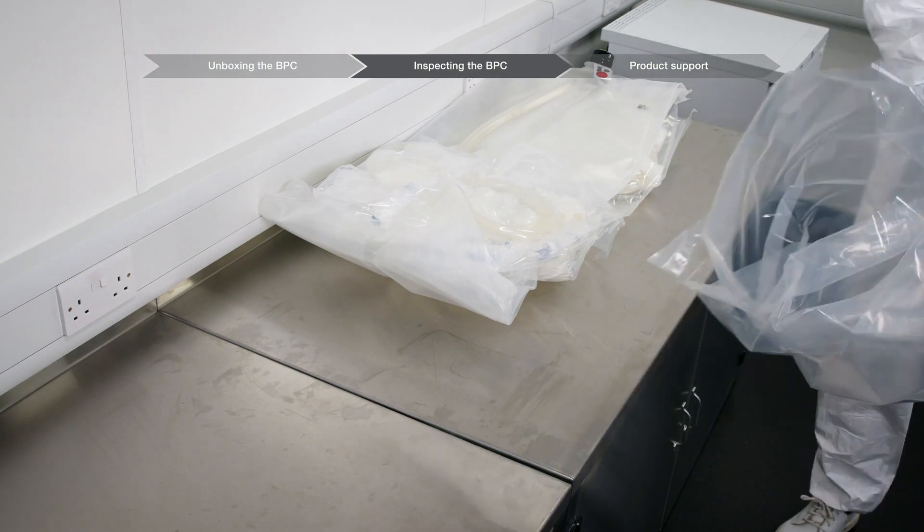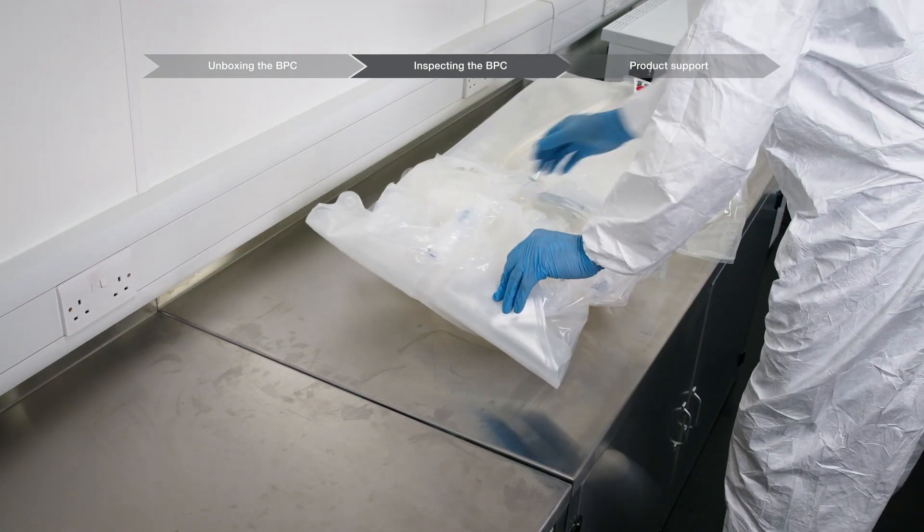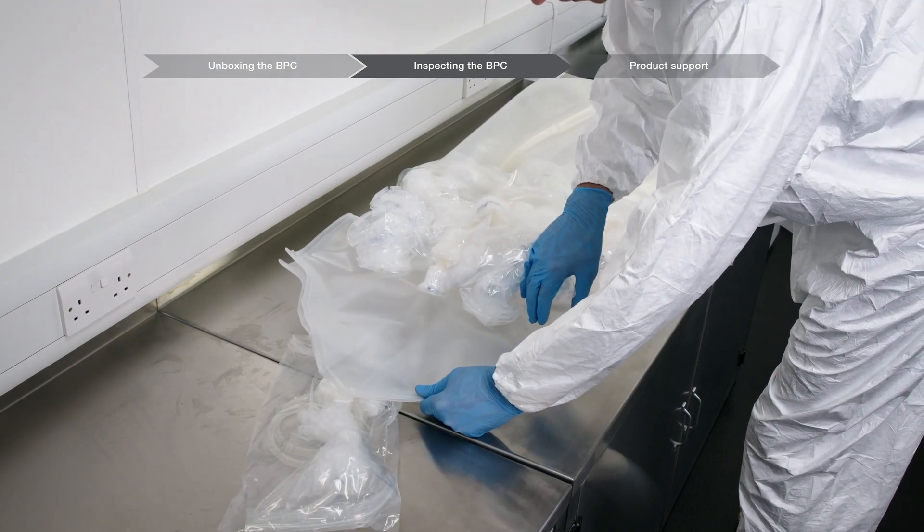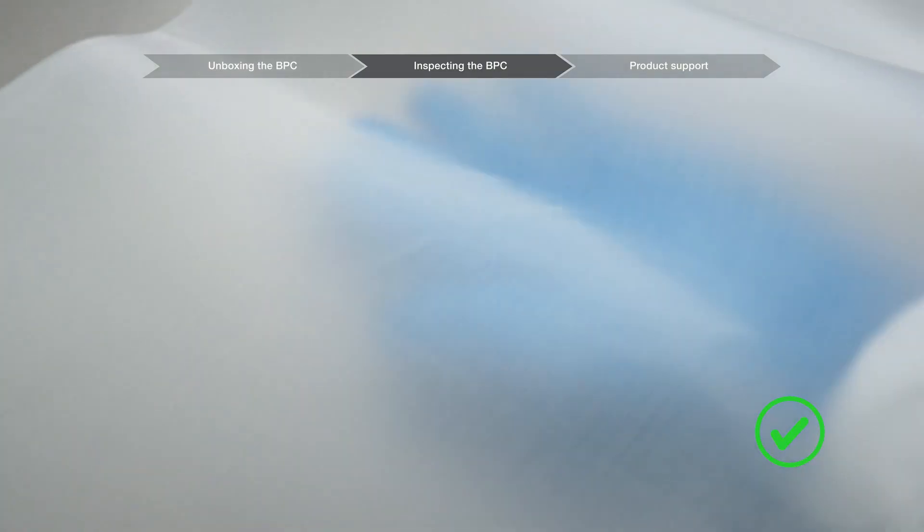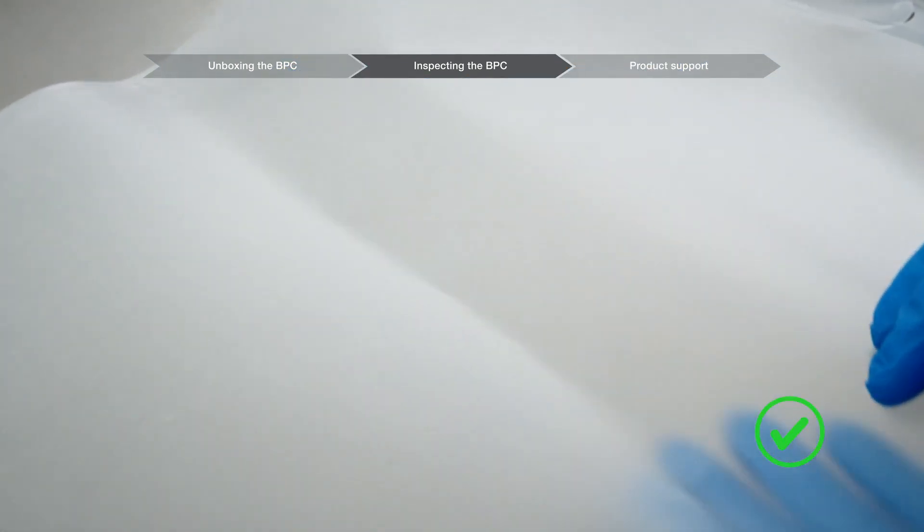Place the BPC on a proper workspace surface. If using a larger BPC, unfold the chamber either all the way open or in segments to inspect for damage or abnormalities. Normal folding marks, light surface wrinkles, and light stress marks are acceptable.